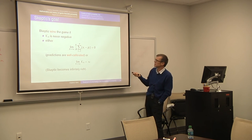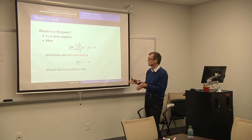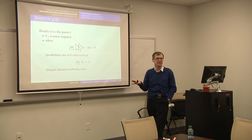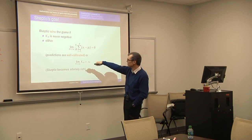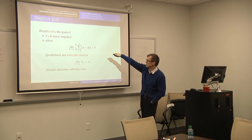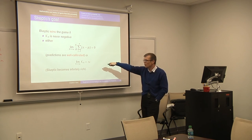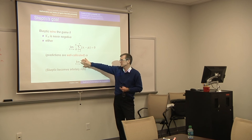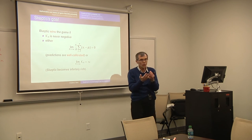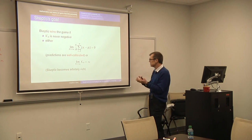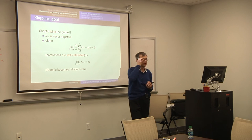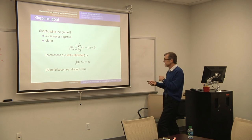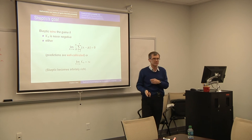One way to formalize it: skeptic and forecaster play this game. Skeptic wins if his capital is never negative. One of two things happens: either this global prediction is satisfied, or his capital becomes infinitely large — meaning forecaster does a bad job, we falsify the forecaster. If he does a good job, his predictions must be unbiased. So we have this game. There are no probabilities in this game, but this looks like the strong law of large numbers.